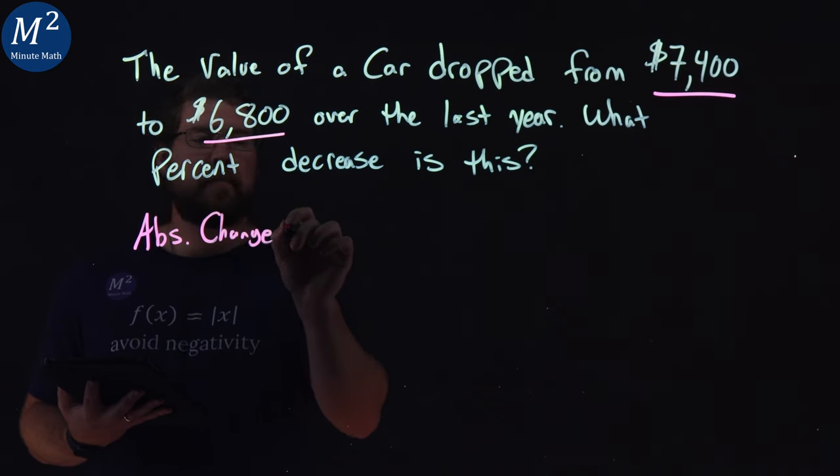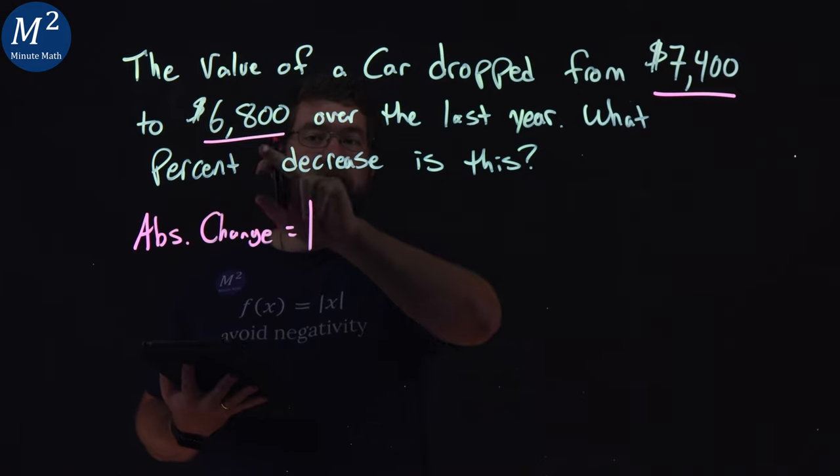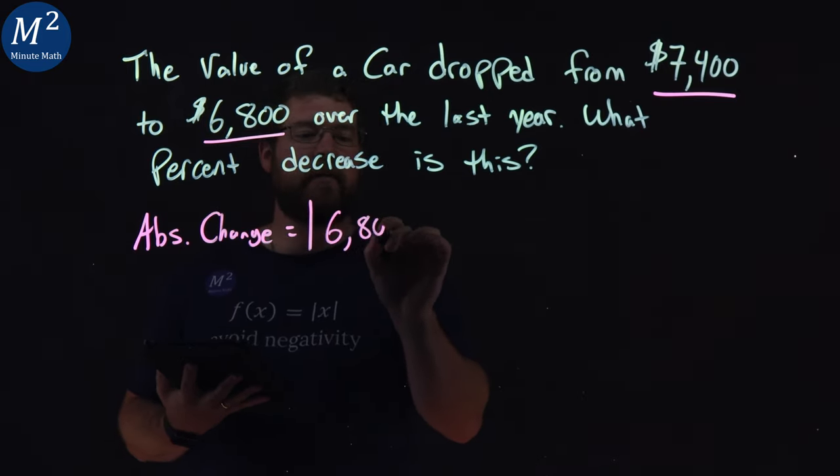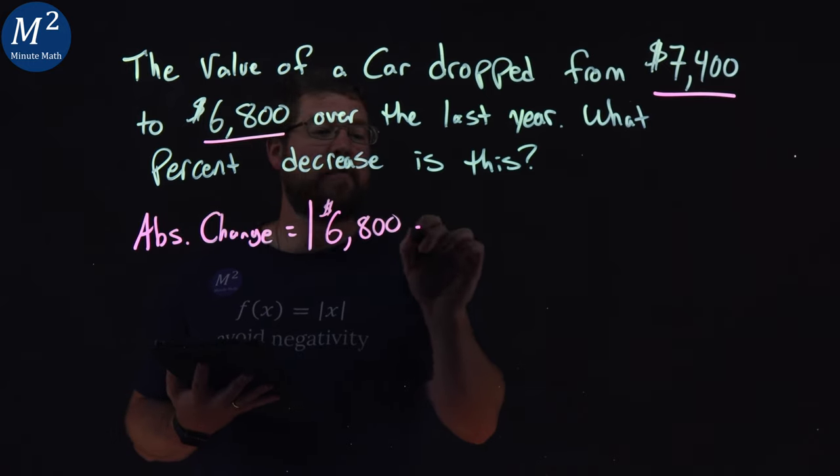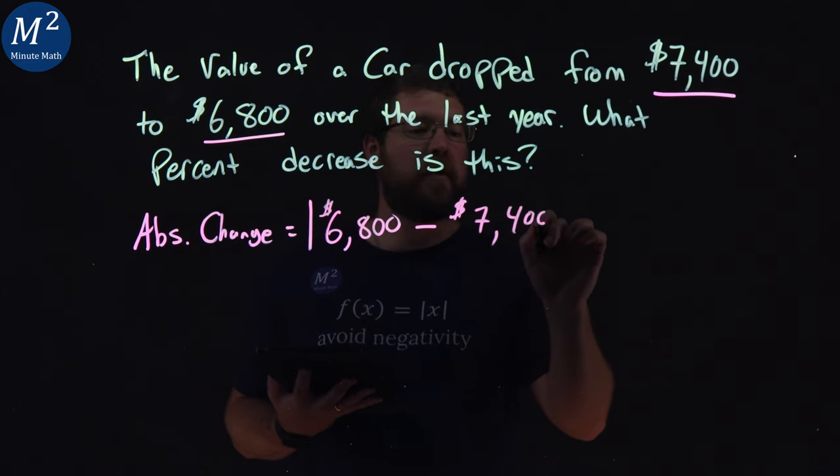we start with the absolute value of our end value, so where we ended with $6,800, and we subtract our beginning value, $7,400.